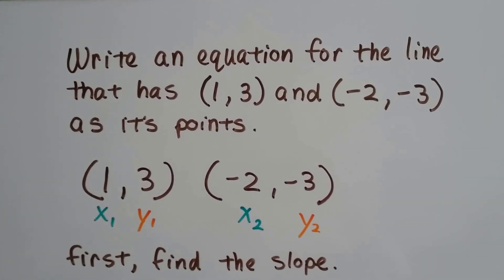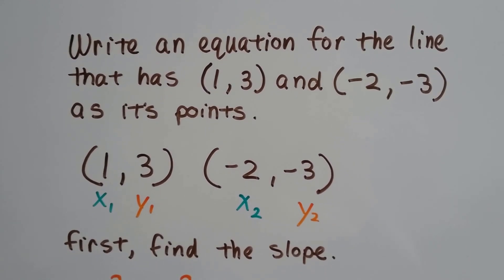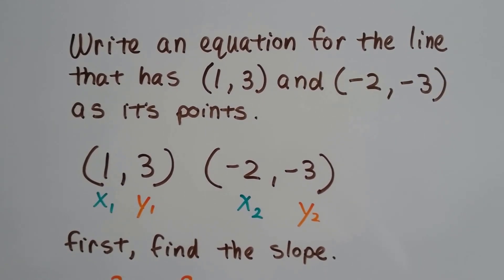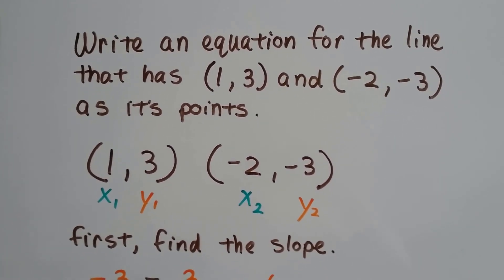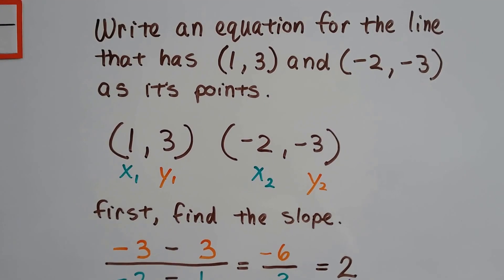So let's look at another one. It says, write an equation for the line that has, they're giving us two ordered pairs, a 1 and a 3 for x and y, and a negative 2 and a negative 3 for x and y as its points.